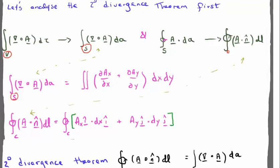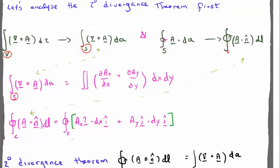Now what we have is these two functions equaling each other if we convert the divergence theorem into two dimensions. Let's look more at these two new expressions. Let's first look at the surface integral of the divergence of A. If we take the divergence of A, we get ∂A_x/∂x plus ∂A_y/∂y. That's pretty straightforward. Now let's look at the other expression — we simply take the dot product — and we get the closed line integral of A_x î dot dx î, plus A_y ĵ dot dy ĵ.